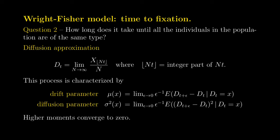The diffusion approximation is a continuous-time Markov chain with uncountable state space — the interval [0,1] — and it has continuous trajectories. Such diffusion processes are characterized by only two families of parameters: the drift parameter μ(x) and the diffusion parameter σ²(x). All higher-order moments (cubic and above) converge to zero, so only these two parameters are needed to fully characterize the process.